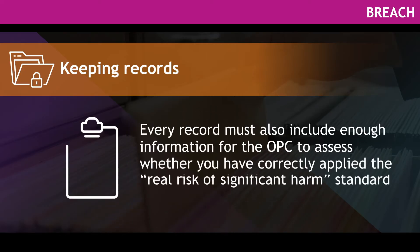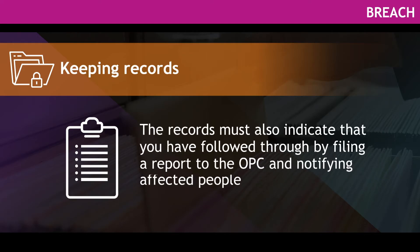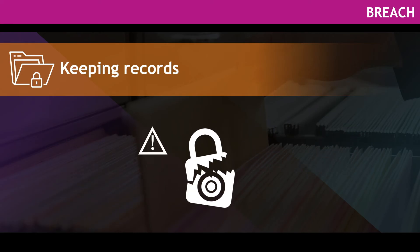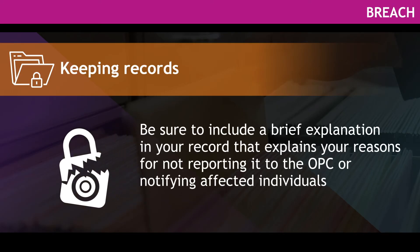Every record must also include enough information for the OPC to assess whether you have correctly applied the real risk of significant harm standard. The records must also indicate that you have followed through by filing a report to the OPC and notifying affected people if the incident is deemed to meet the standard. If you determine that a breach doesn't pose a real risk of significant harm, be sure to include a brief explanation in your record of your reasons for not reporting it to the OPC or notifying affected individuals.